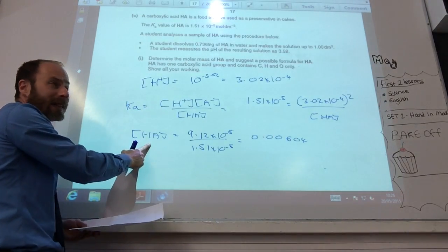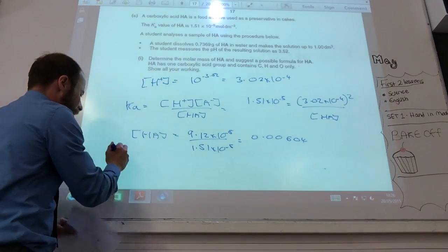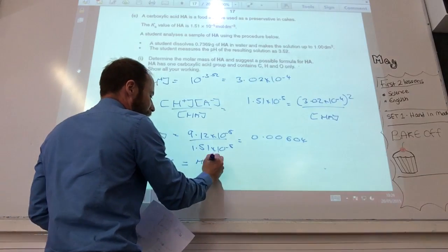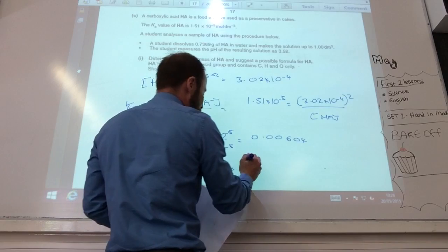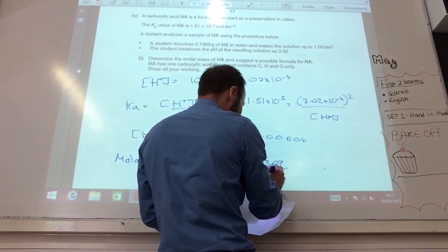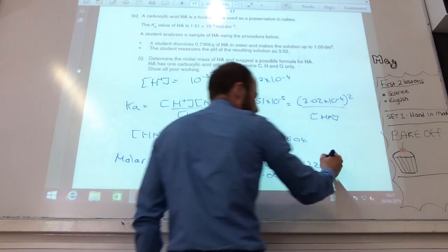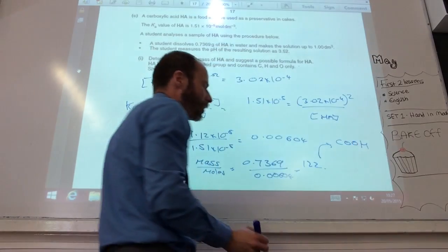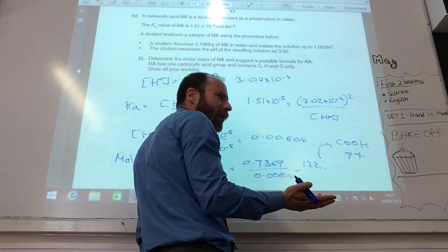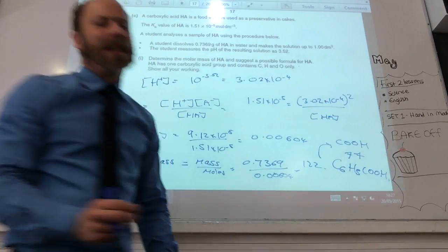So, HA is 9.12×10^-8 over 1.51×10^-5, which gives me 0.0604. That's the number of moles in one dm³. I know that that originally came from that mass. So, the molar mass is mass over moles, which equals 0.7369 over 0.00604, which gives me 122. You know that 122 contains a COOH group. If you take that away, you end up being about 77. If you then play around with carbon to hydrogen, you should end up being C6H5COOH.